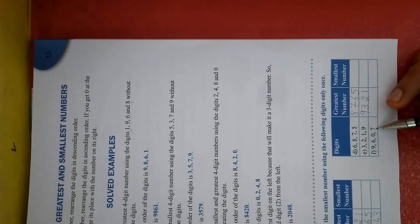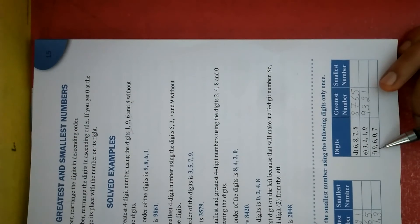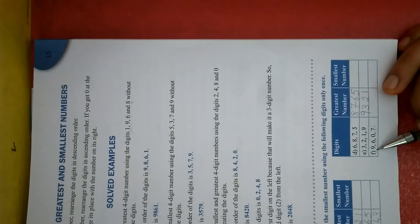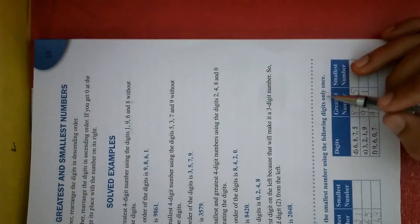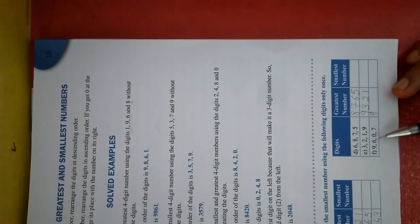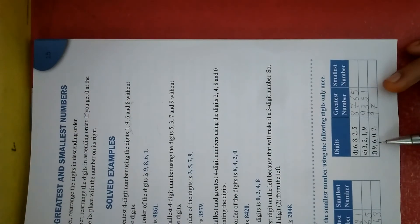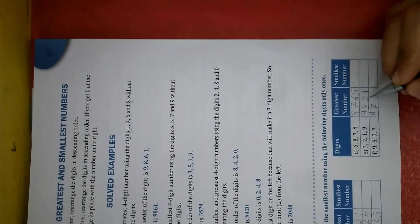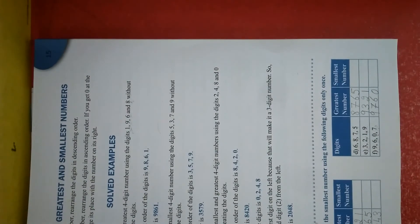The last question gives you 4 digits: 9, 6, 0, 7. We need to form the greatest number. Among these four digits, 9 is clearly the largest — and in single digit numbers, 9 is always the largest. Write 9 first. Remove 9. Remaining: 6, 0, and 7. Among these, 7 is larger than both 0 and 6. Write 7. Remaining: 6 and 0. Among these, 6 is larger — 0 is the smallest. Write 6, then finally write 0. So our greatest number is 9760, written in decreasing order.